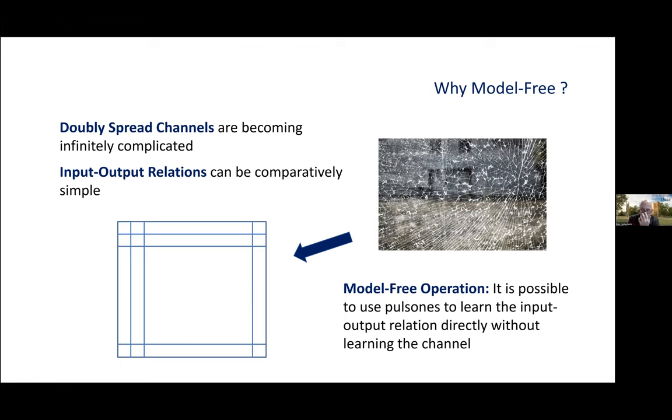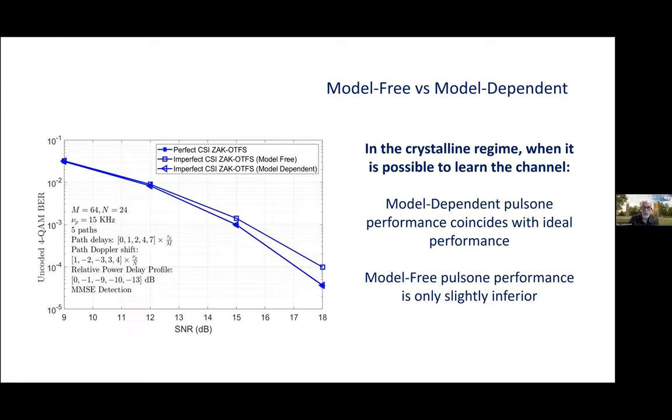And is there an alternative to working really hard to figure out where all the reflectors are? Can we operate model-free? What do we mean about the difference between model-free and model-dependent? Model-dependent is where we go after the reflectors, try and figure out what they are. Model-free is where we focus on the input-output relations.